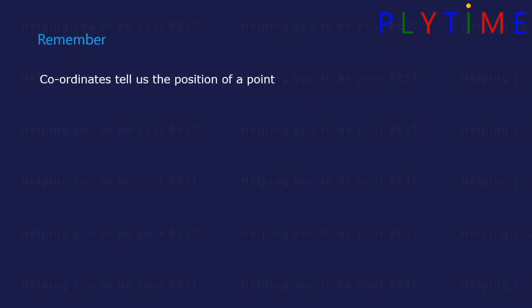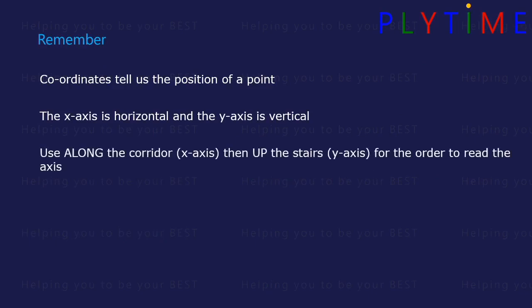Remember, coordinates tell us the position of a point. The x-axis is horizontal, and the y-axis is vertical. So we use along the corridor, the x-axis, and up the stairs, the y-axis, for the order to read the axes.